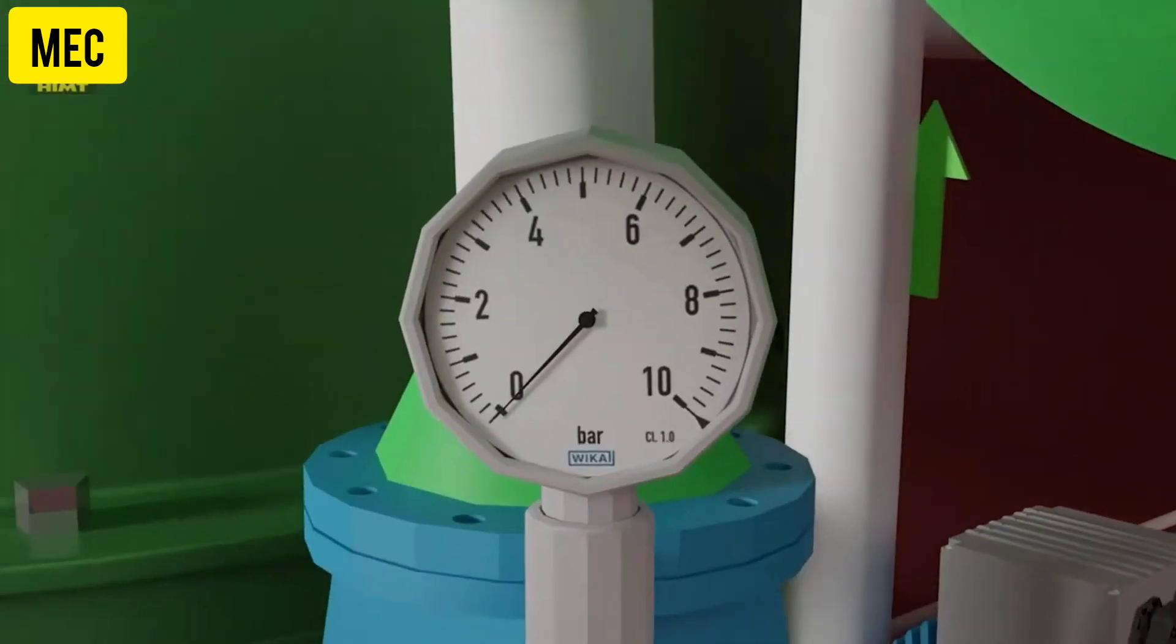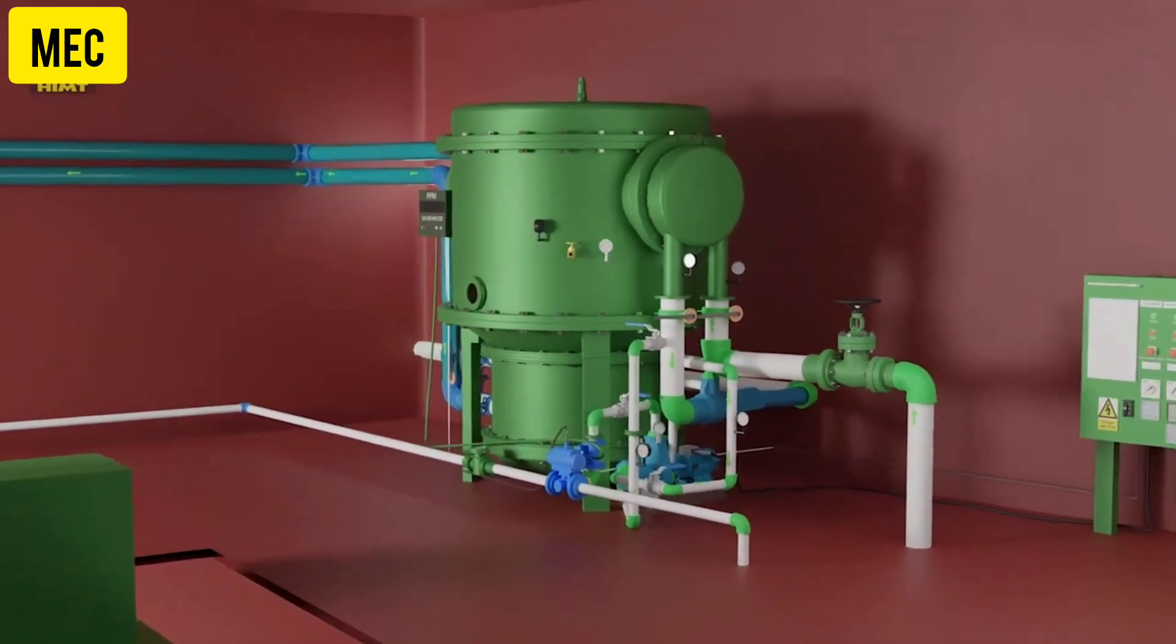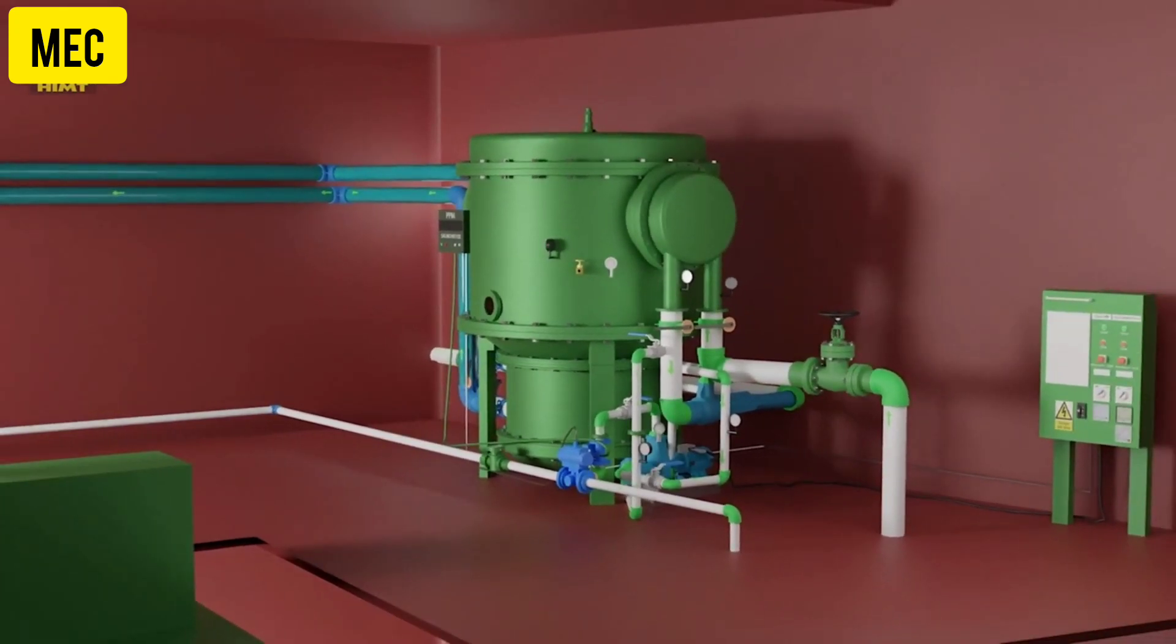This is the pressure gauge at the discharge side of the distillate pump, providing a reading of the pressure at the pump's outlet, allowing for performance evaluation. These indicating instruments collectively enable operators to monitor and regulate the freshwater generator, ensuring its efficient and reliable operation for water production.